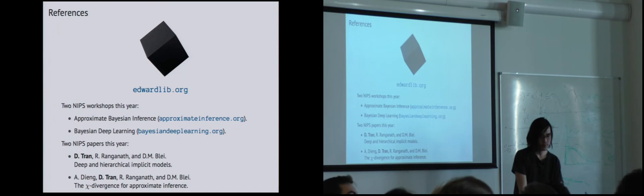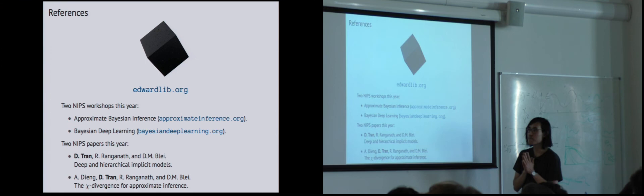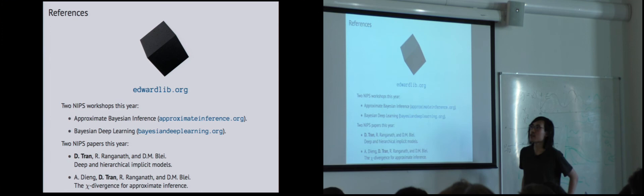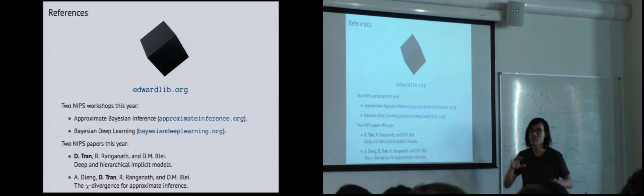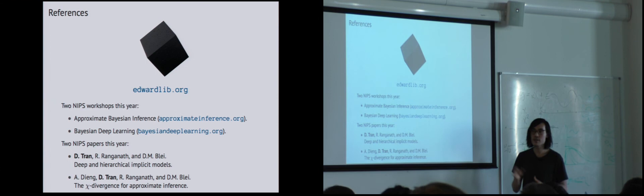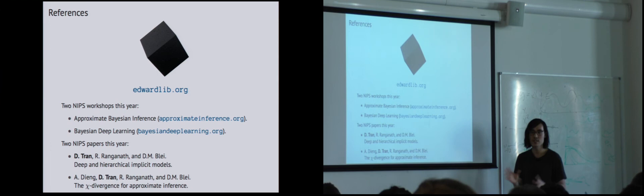Q&A: One questioner asked about the computational price of generic inference compared to hand-coding it yourself. The answer is that the price you pay is actually nothing. The underlying computational graph you write for either the generic one or a model-specific hand-coded algorithm is exactly the same. We ran a hand-written HMC on basic logistic regression and compared it to our generic implementation of HMC — they ran at the exact same runtime. Because the graphs are exactly the same, computation and runtime are exactly the same.